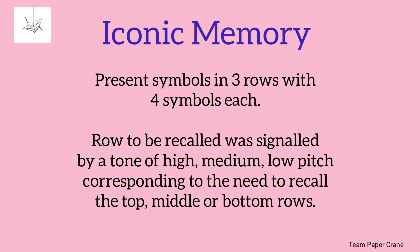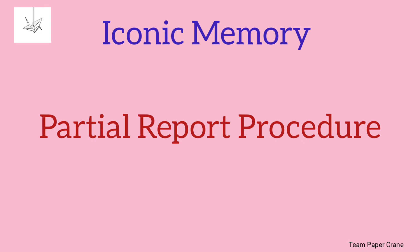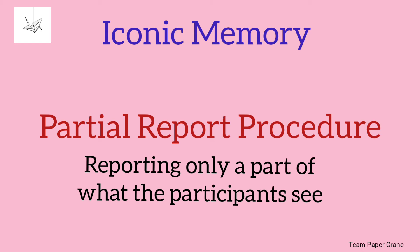In each row there are symbols to recall — approximately 3 to 4 symbols per row. This is the experiment in Phase 2, where George Sperling uses a procedure called the Partial Report Procedure.